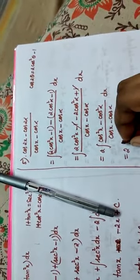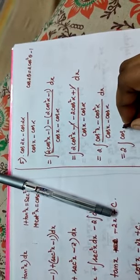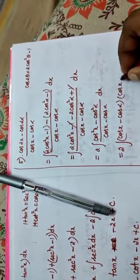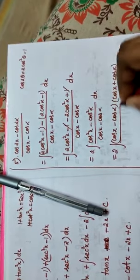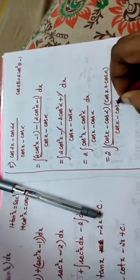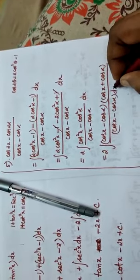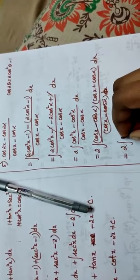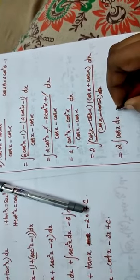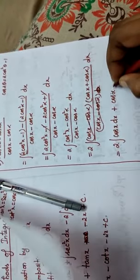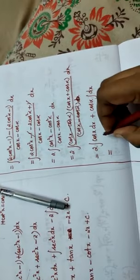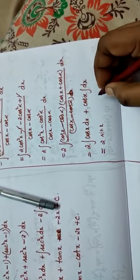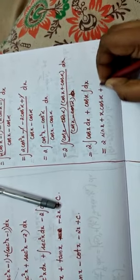Take 2 outside: integral of cos squared x minus cos squared alpha, divided by cos x minus cos alpha. Using the identity a squared minus b squared equals (a plus b)(a minus b), the factor cos x minus cos alpha cancels. So we get 2 into integral of cos x plus cos alpha dx. Integrating: 2 into sin x plus x cos alpha.